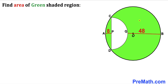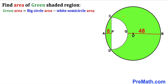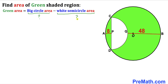Let's make an observation: the area of the green shaded region is equal to the area of the big circle minus the area of the white semicircle, as you can see in this equation. So our task is to calculate both the area of the big circle and the area of the white semicircle.